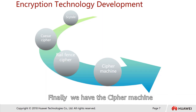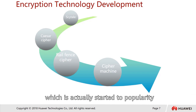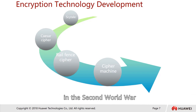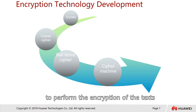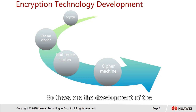Finally, we have the cipher machine, which began gaining popularity in the Second World War when the German Nazis used something called the Enigma to perform encryption of text. These are the developments of encryption technologies.